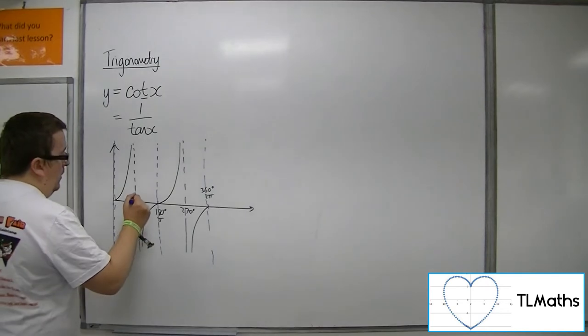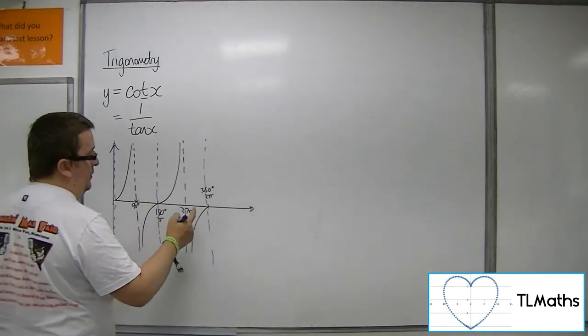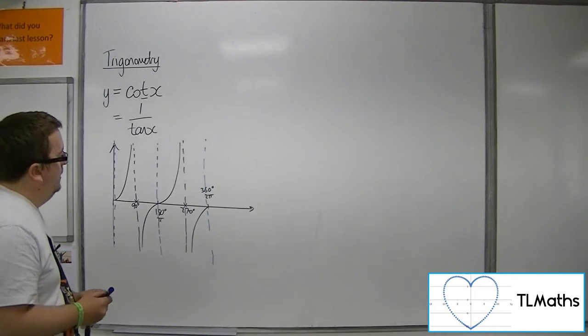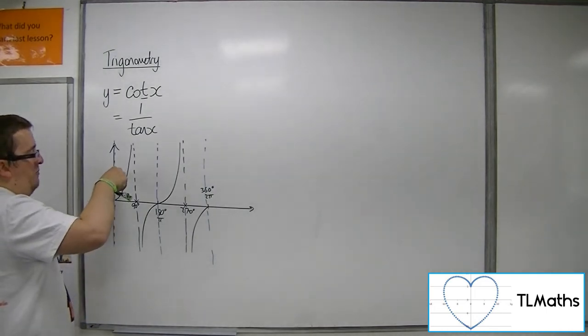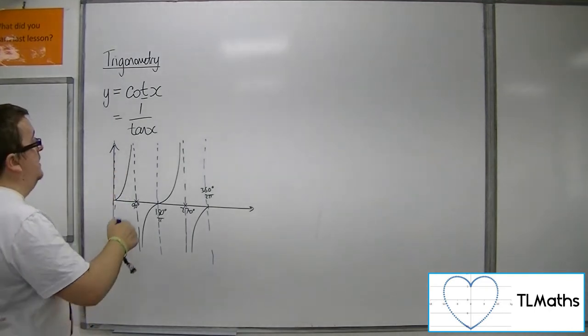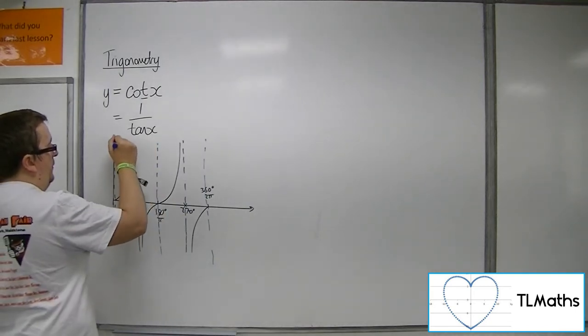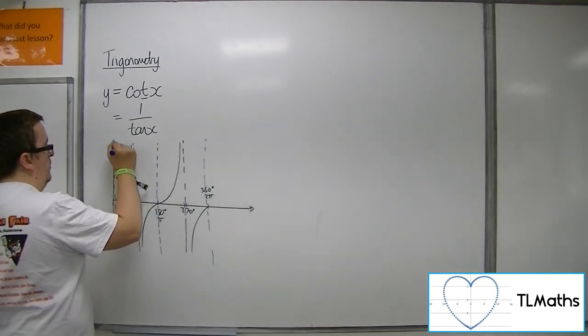So it's going to go through the x-axis at 90 or pi over 2, and 270 or 3 pi over 2. Now, because the tan curve is positive between 0 and 90, cot must also be positive between 0 and 90, because 1 over positive is positive. So the curve must tend towards that asymptote but go through 90 degrees.